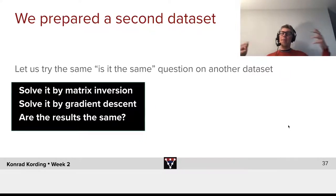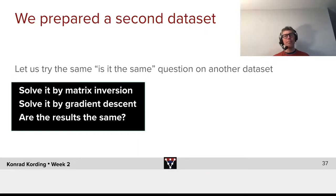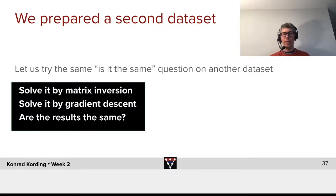We prepared a second linear regression data set for you — pretty much the same data set with just some minor variations. What I want you to do on this data set is to solve this linear regression problem by matrix inversion and by gradient descent.